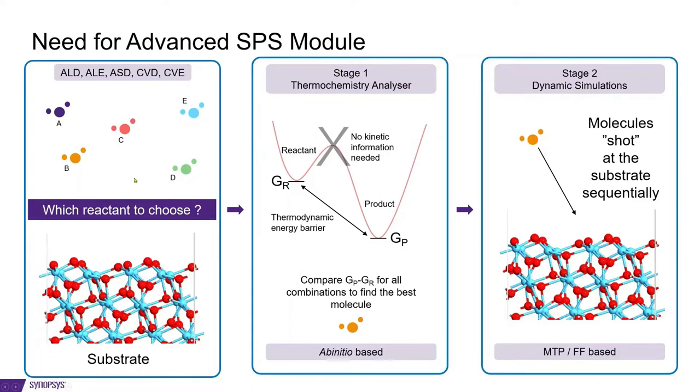This can be done in two stages. In the first stage, we can do a thermochemical analysis. For each precursor substrate combination, we can compare the reactant and product state energetics, essentially their free energy difference, and find the best molecule. This is reactant screening, so this doesn't require the very expensive kinetic information.